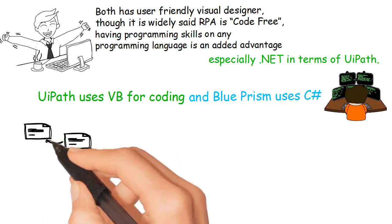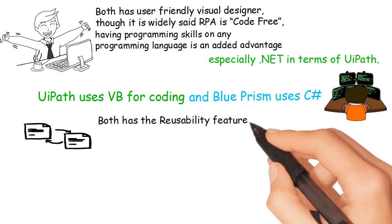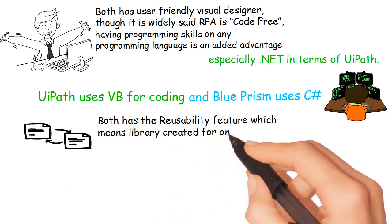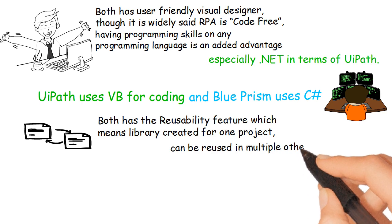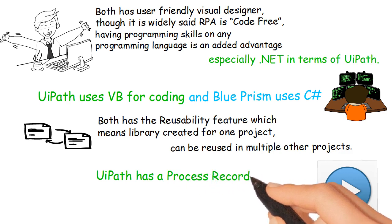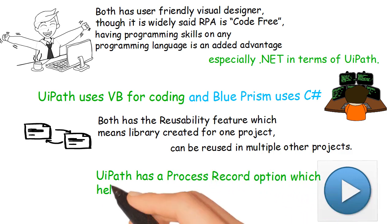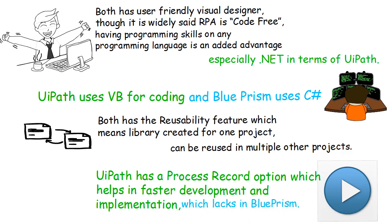Reusability of Library: Both tools have the reusability feature, meaning a library created for one project can be reused in multiple other projects. Process Record Option: UiPath has a process record option which helps in faster development and implementation, which is lacking in Blue Prism.